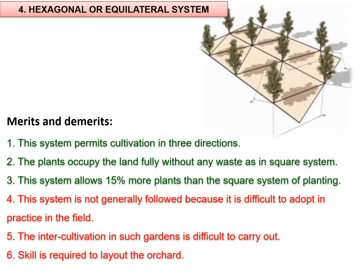The fourth important system is the hexagonal system, also considered an equilateral system. Sometimes a seventh tree is planted in the center of the hexagon, which is why it is also called the septal plate system. In this system, trees are planted at each corner of an equilateral triangle. The distance between rows is less than the distance between trees in a row, but the tree-to-tree distance in all six directions remains the same. This system is usually employed where land is expensive and fertile with good water availability. The main advantage is that it accommodates about 15% more plants than the square system.